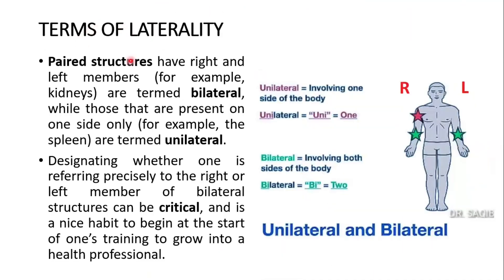The terms of laterality: paired structures have right and left members — for example, the two kidneys — and are termed bilateral. Structures present on one side only — for example, the spleen — are termed unilateral. Unilateral means involving one side of the body, while bilateral means involving both sides. The red marker indicates a structure present only on one side; the green markers indicate structures on both sides.